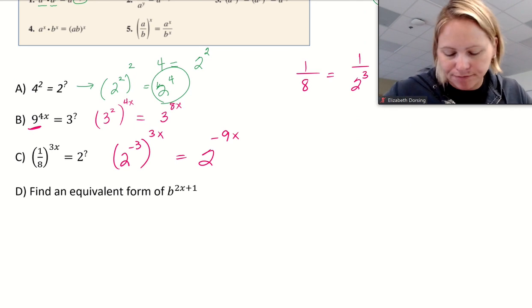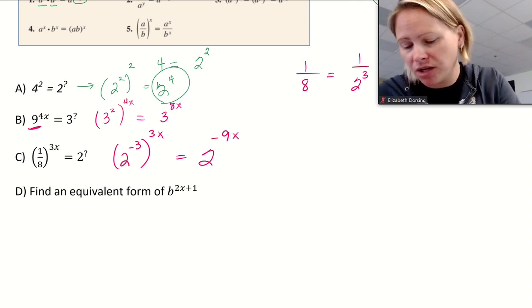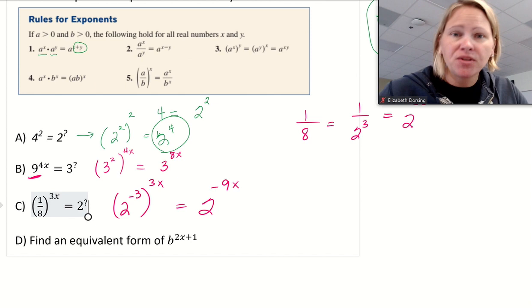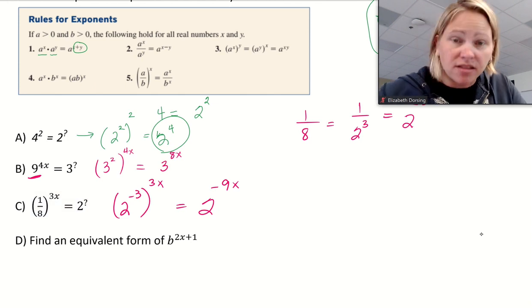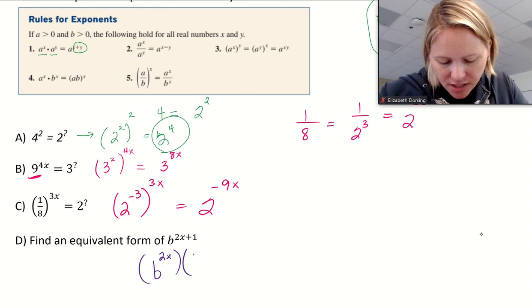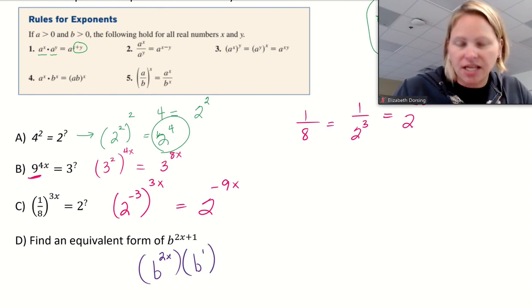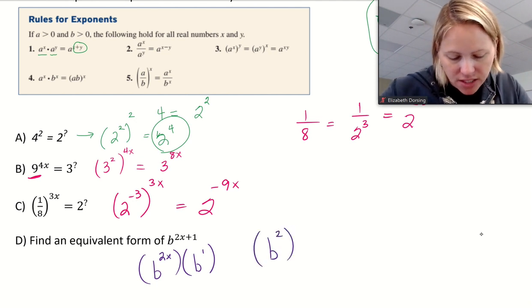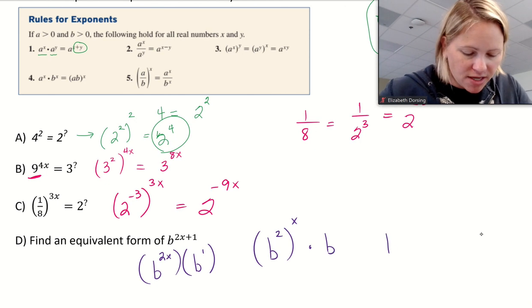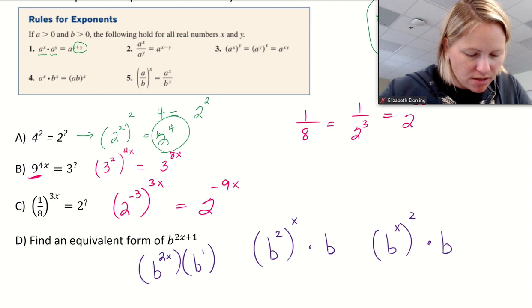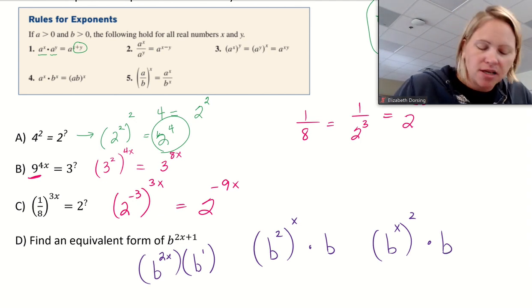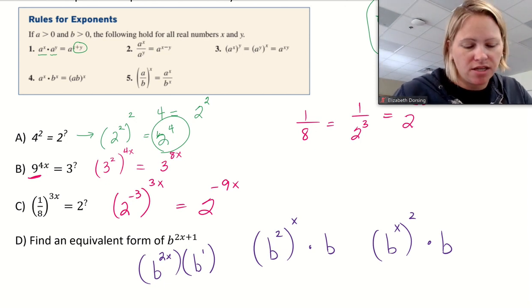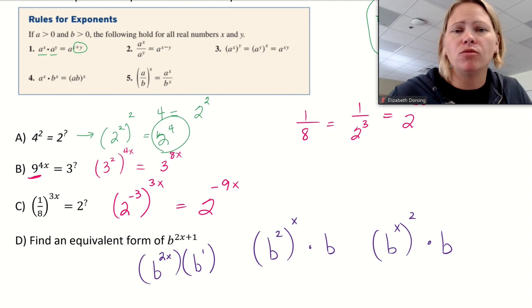For part D, find equivalent forms of b^(2x+1). We have a couple of options. Using the rule that like bases being multiplied have their exponents added, we can write b^(2x) · b^1. We could also write (b²)^x · b, or b^x² · b. We need to get comfortable manipulating exponents following these rules to make expressions easier to handle when we get to more complex calculus.